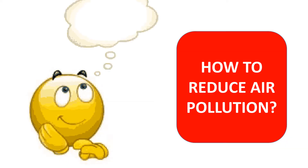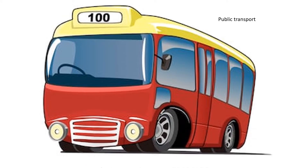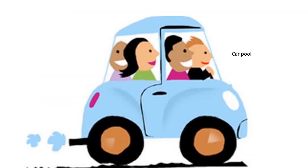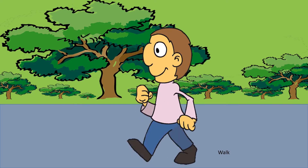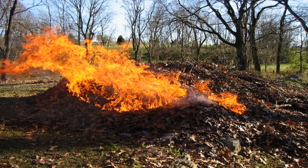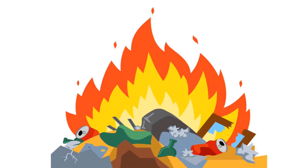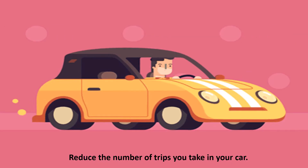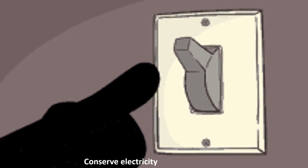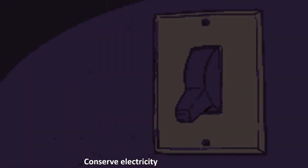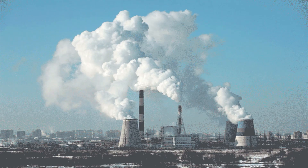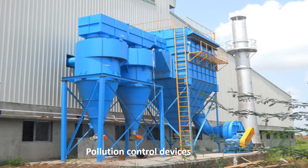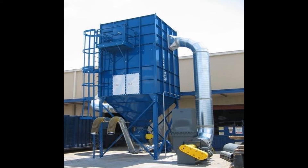How to reduce air pollution: Use public transportation, carpool, cycle, or walk whenever possible. Avoid burning leaves, trash, and other materials. Reduce the number of trips you take in your car. Conserve electricity and set air conditioners to normal temperature.